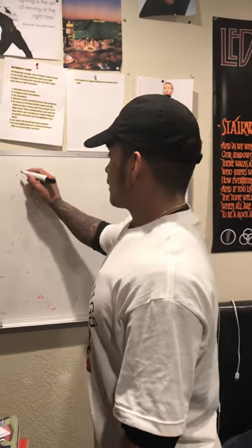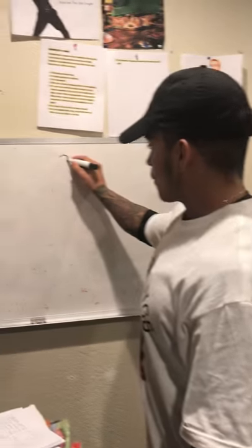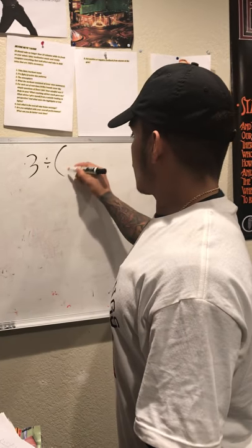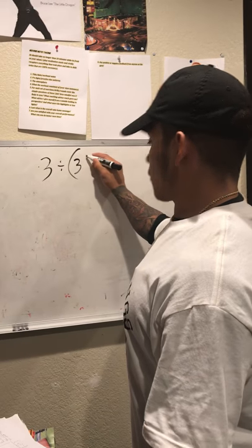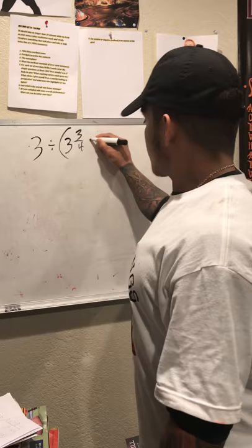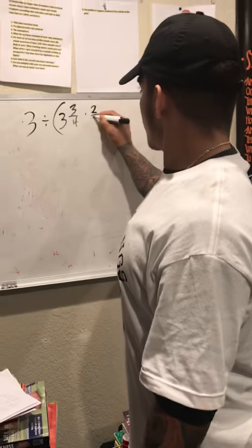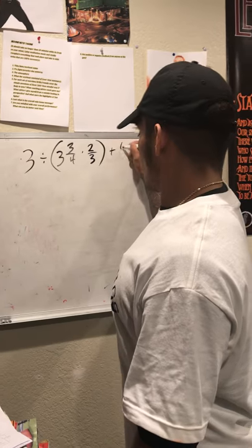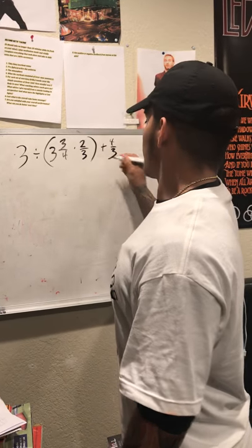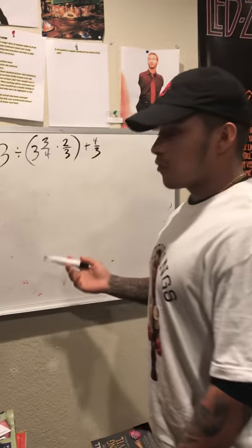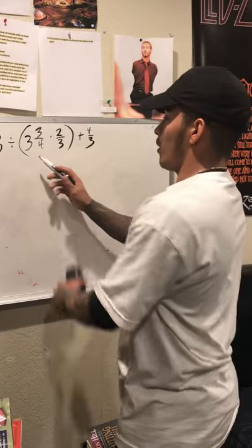I'm gonna do number 3, which is 3 divided by the mixed number 3 and 3 fourths times 2 over 3, plus 4 over 3. The first thing that catches my eye is the fact that we gotta work on what's in the parentheses.